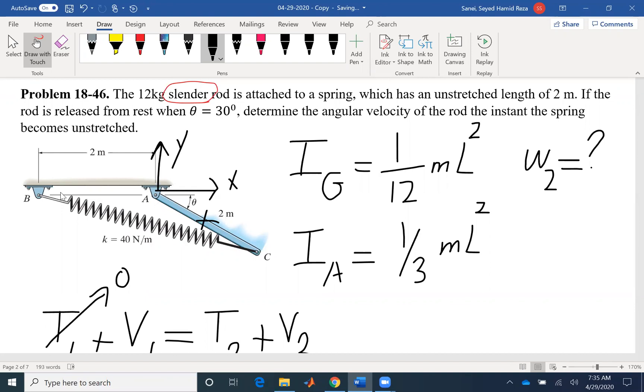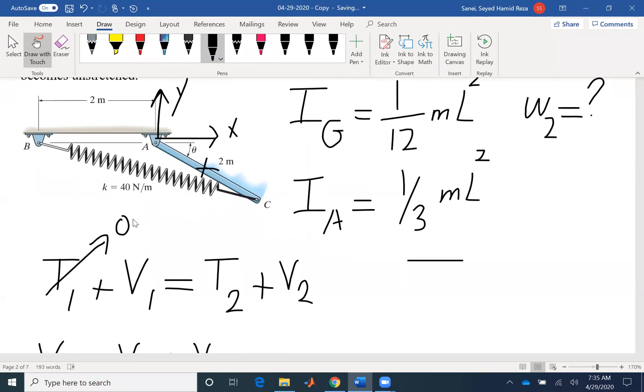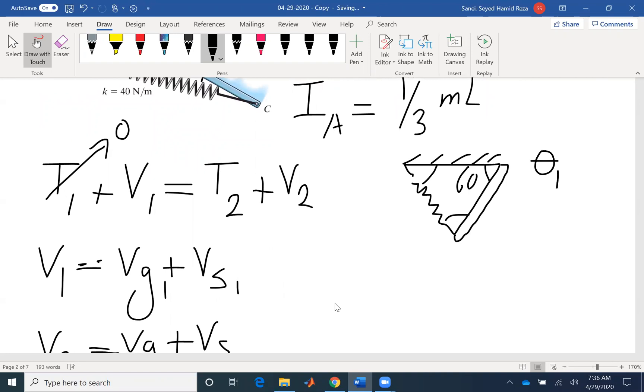If we look at the problem, you see this length is 2 meters, and this length is 2 meters, and we are looking for an instance where the spring becomes 2 meters. So we have a triangle with all the edges 2 meters. In that final case, this is our fixed plane, this is our rod, and this is our spring. If all of them have the same length, the angles are 60 degrees, all the angles are equal. So we are dealing with an equilateral triangle. We have the initial angle 30 degrees and the final angle 60 degrees.